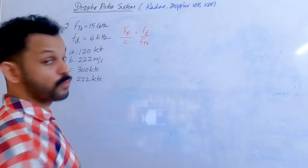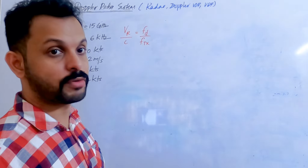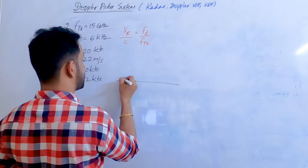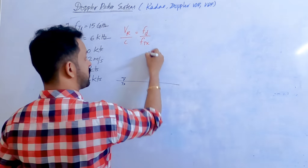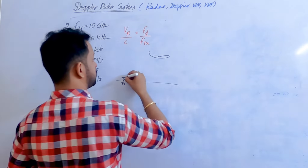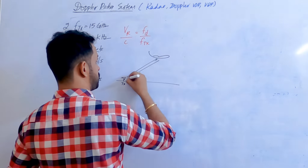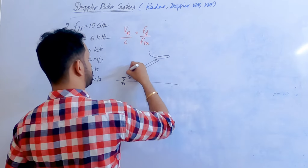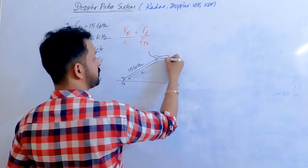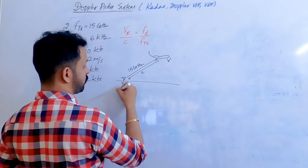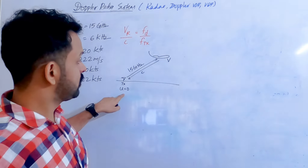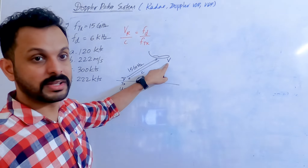The aircraft is actually flying away from the transmitter — it's not moving towards it, it's flying away. The transmitter is stationary, transmitting at 15 gigahertz. The velocity of transmission is C, and the velocity of the transmitter is zero. Since the velocity of the transmitter is zero, the relative velocity is nothing but the velocity of the aircraft.